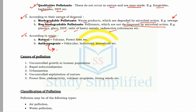Another criteria is according to origin: natural or anthropogenic. Natural sources include volcanic activity and forest fires. Anthropogenic — meaning human-caused — factors include vehicular pollution, industrial pollution, and household pollution.